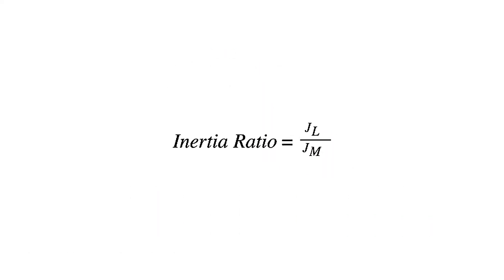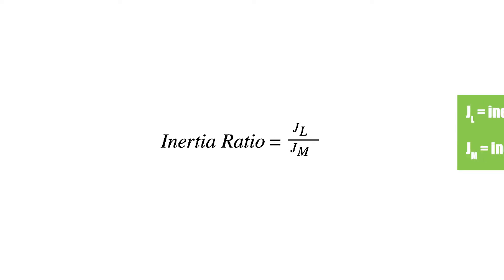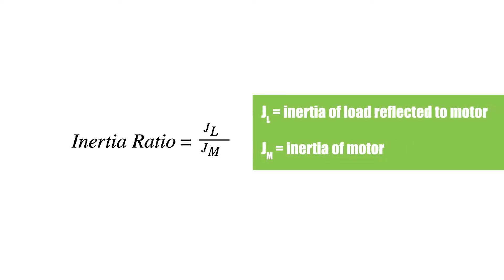If the inertia of the load is significantly higher than the inertia of the motor — that is, if the inertia ratio is high — the motor will have a difficult time controlling the load, which can result in resonance and cause the system to overshoot its target parameter: position, velocity, or torque. And as it attempts to control the load, the motor draws higher levels of current, which decreases efficiency and increases wear on the motor and electrical components.